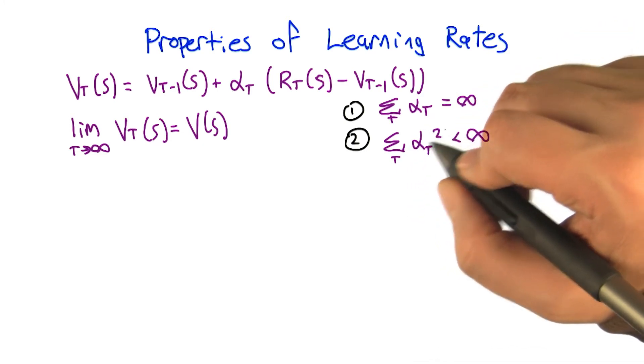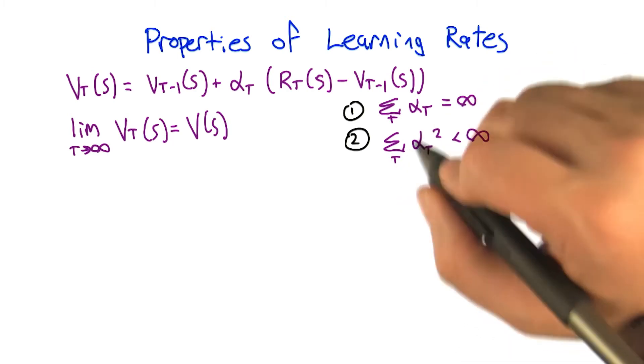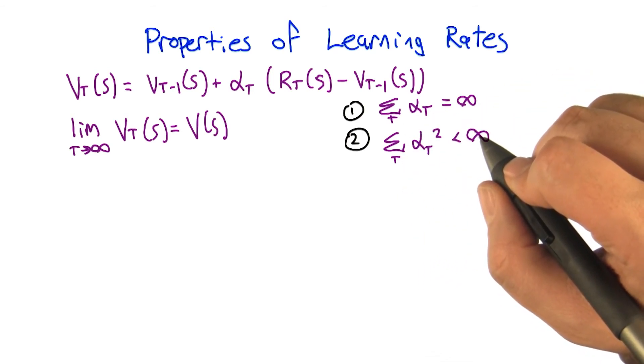But the square of the learning rates, if you sum those up, it's less than infinity. And we're not going to get into the details about why these are the standard properties for making this kind of learning rule work.